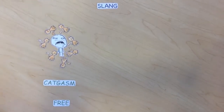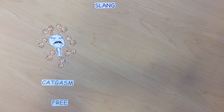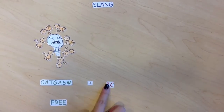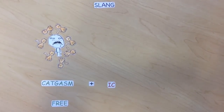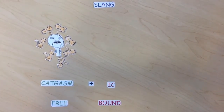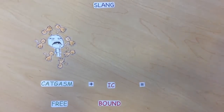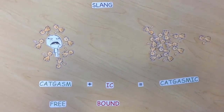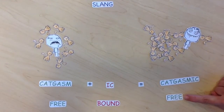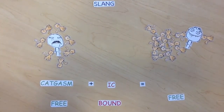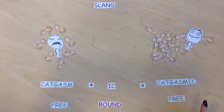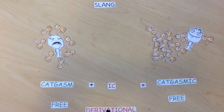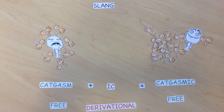If we wanted to describe something that evokes an experience similar to a catgasm, we would have to change the word 'catgasm.' By adding the bound morpheme '-ic,' we get 'catgasmic.' These words have different morphosyntactic categories. Therefore, '-ic' is a derivational bound morpheme.